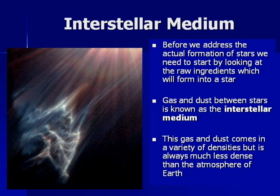Before we actually talk about star formation, we look at the raw ingredients. This interstellar medium is really rather simple — it's made of gas and dust. The gas and dust come in a variety of different densities. Some of the interstellar medium is extremely tenuous; the interstellar medium between galaxies can have only a few atoms per cubic meter. In other places it's dense enough to even block light.